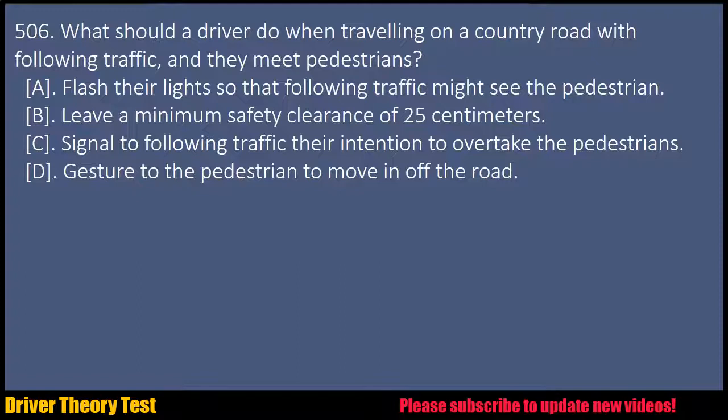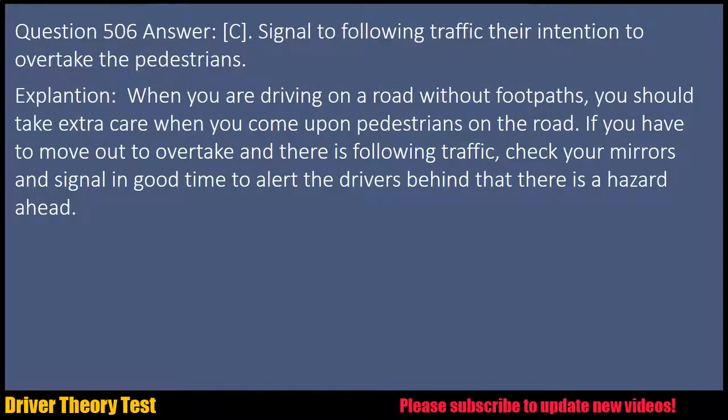Question 506: What should a driver do when traveling on a country road with following traffic and they meet pedestrians? A. Flash their lights so that following traffic might see the pedestrian. B. Leave a minimum safety clearance of 25 cm. C. Signal to following traffic their intention to overtake the pedestrians. D. Gesture to the pedestrian to move in off the road. Answer: C. Signal to following traffic their intention to overtake the pedestrians. Explanation: When you are driving on a road without footpaths, you should take extra care when you come upon pedestrians on the road. If you have to move out to overtake and there is following traffic, check your mirrors and signal in good time to alert the drivers behind that there is a hazard ahead.